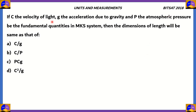If c is the velocity of light, g the acceleration due to gravity, and p is the atmospheric pressure — now these are considered as the fundamental quantities in the MKS system — then the dimensions of length will be same as that of: c by g, c by p, pcg, or c squared by g. We have three quantities here and we need to find the dimensions of a fourth quantity. So it's a good idea to start by looking at the dimensions of c, g, and p.